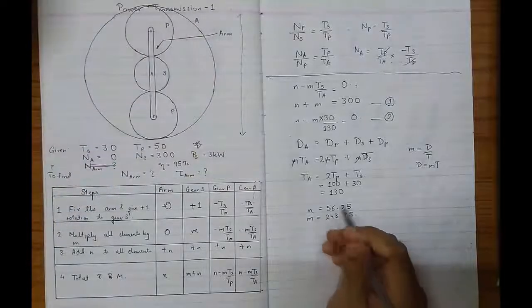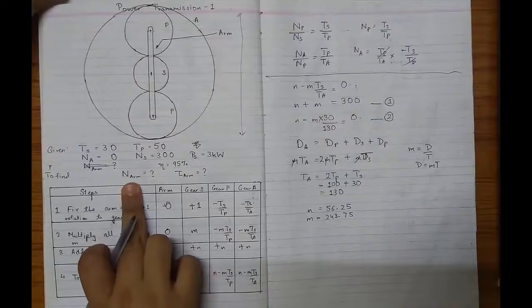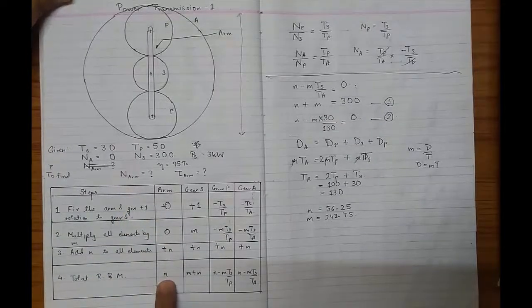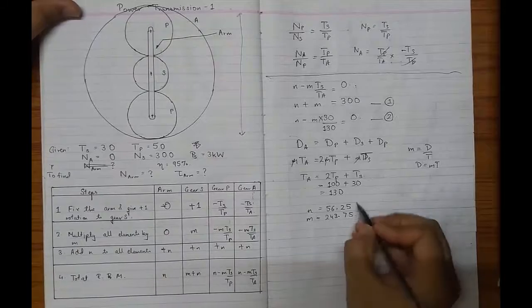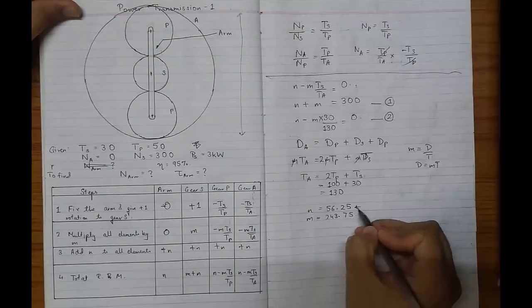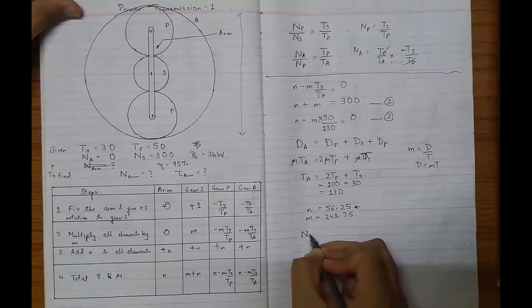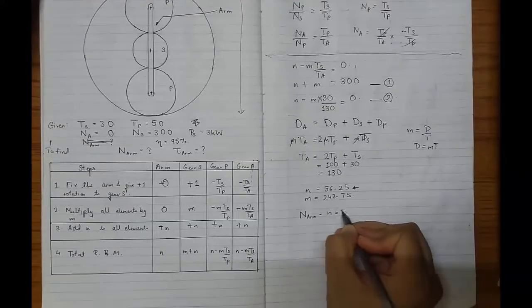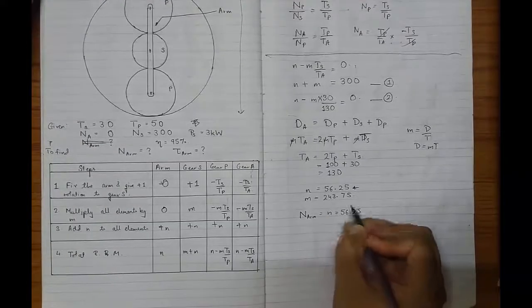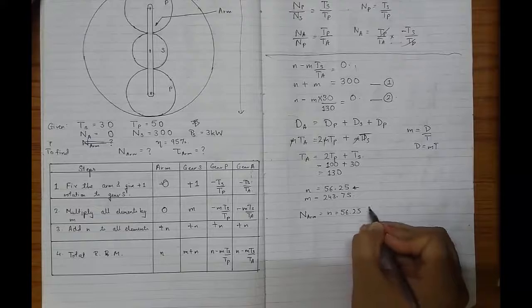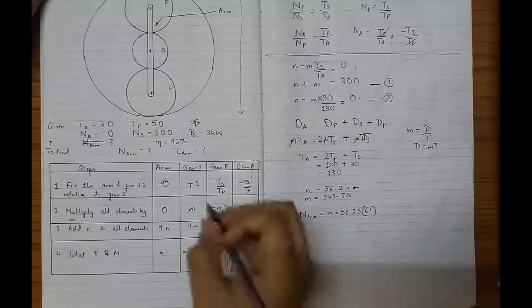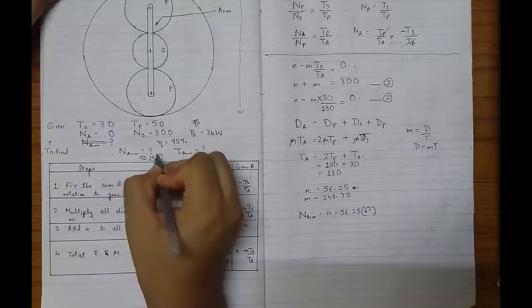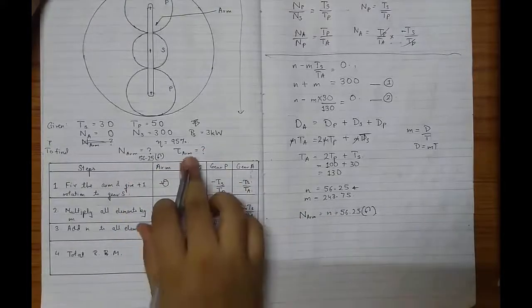They are asking for the RPM of the arm. The RPM of the arm is N only, which is 56.25. It is positive, so it is anti-clockwise. So the RPM of the arm is 56.25, anti-clockwise.